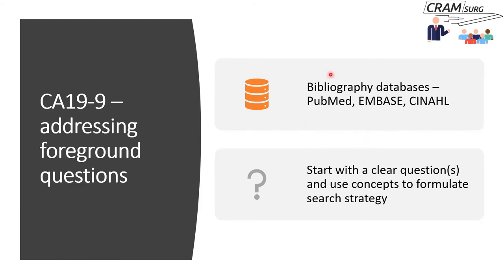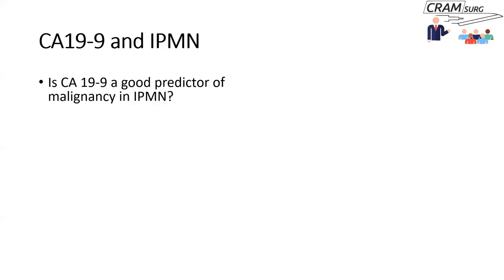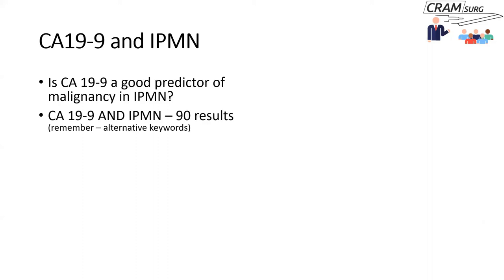When searching databases, the most important thing is to start with a clear foreground question, because a clear question helps you identify concepts for concept building to formulate your search strategy. My question was: is CA-19-9 a good predictor of malignancy in IPMN? I typed CA-19-9 as one keyword and IPMN as another, combined them with AND, and got 90 results on PubMed.